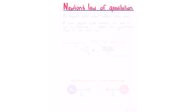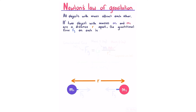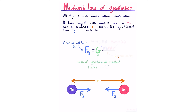Newton's law of gravitation. All objects with mass attract each other. For two objects with masses m1 and m2 separated by distance r, the gravitational force Fg on each is: Fg equals G times m1 times m2 divided by r squared, where G is the universal gravitational constant 6.67 × 10⁻¹¹ N m² kg⁻².